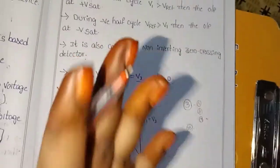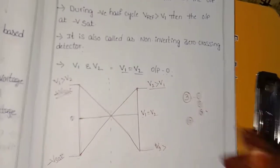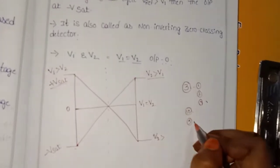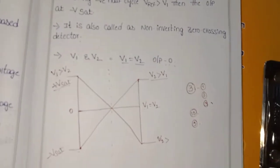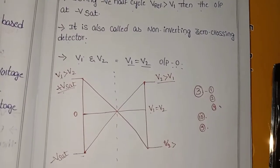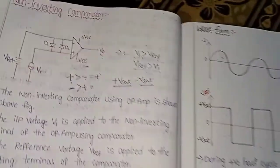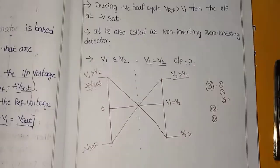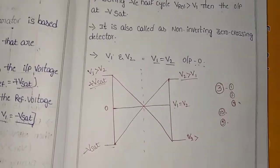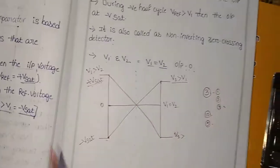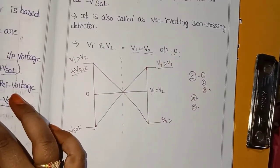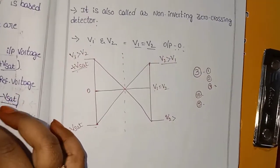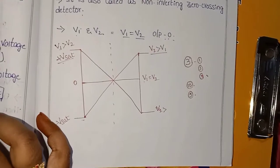If V1 equals V2, the output is zero — that accounts for 5 marks. The cases are: inverting or non-inverting — those are the two main cases. This circuit diagram is a very important element. Please study it carefully. If you have any doubts, leave your comment in the comment section below. Please comment, share, and I will reply. Thank you for watching!